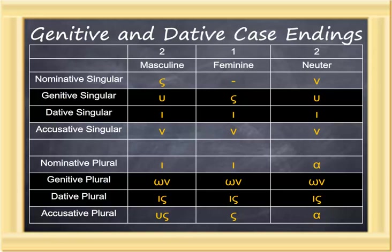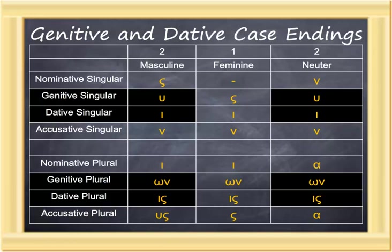Some tricky things do happen. First, there is a bit of ambiguity: the genitive singular masculine and the genitive singular neuter are identical in form. Likewise, the dative singular masculine and the dative singular neuter. Similarly, the genitive plural masculine and the genitive plural neuter, and the dative plural masculine and the dative plural neuter. The genitive and dative forms of masculine and neuter are identical in their respective cases.